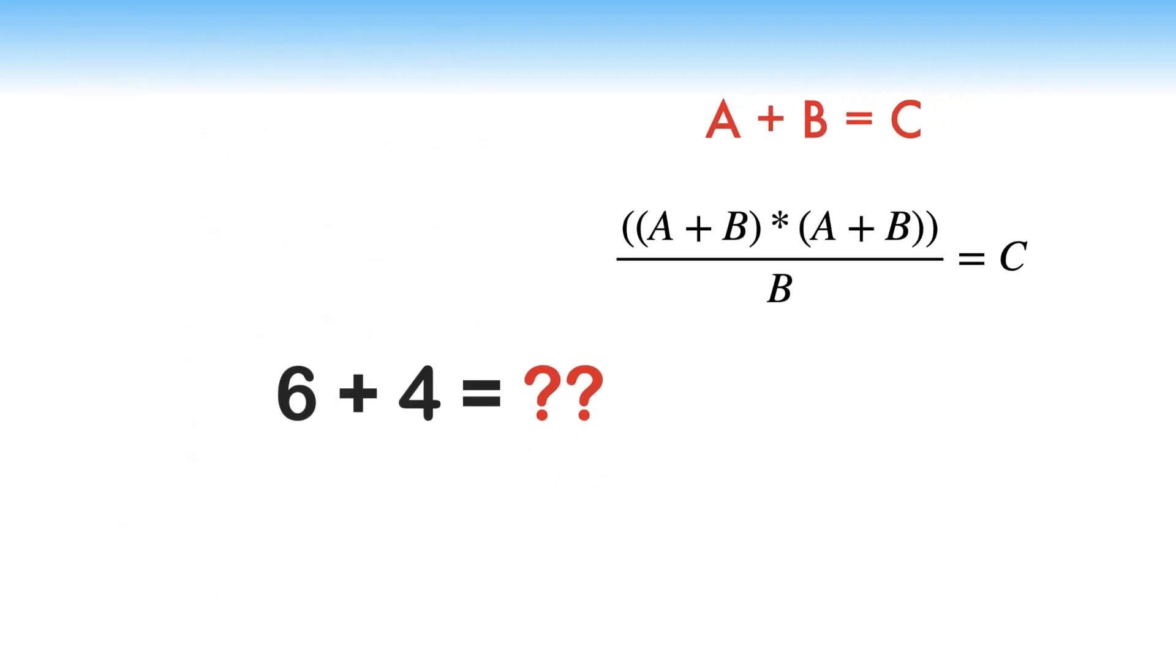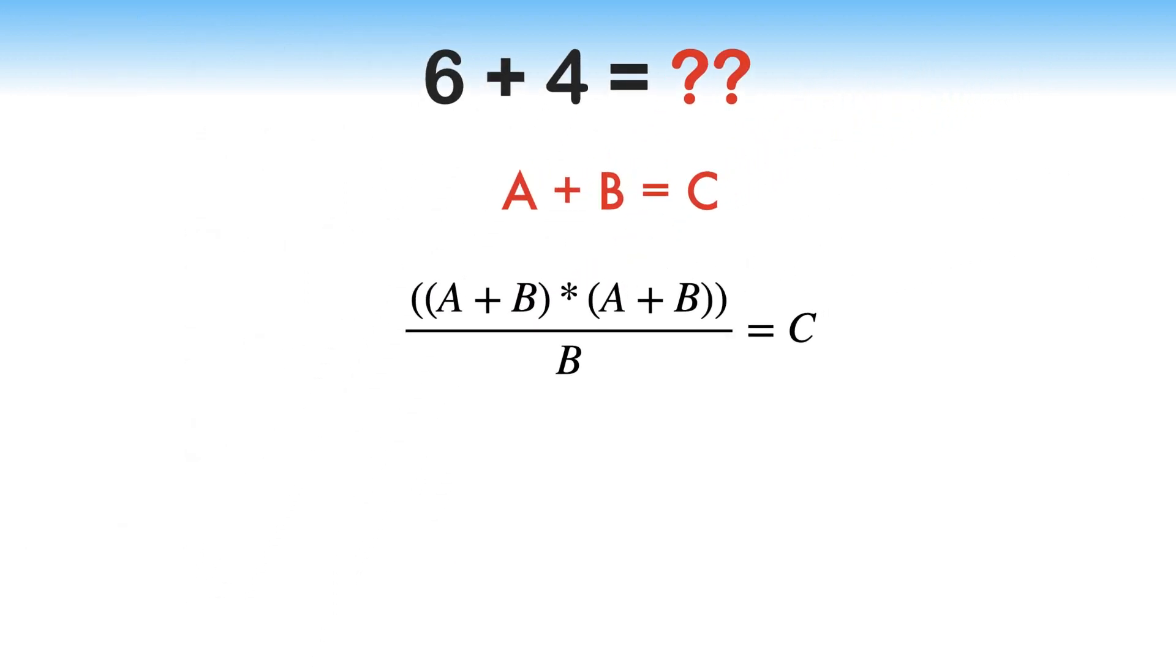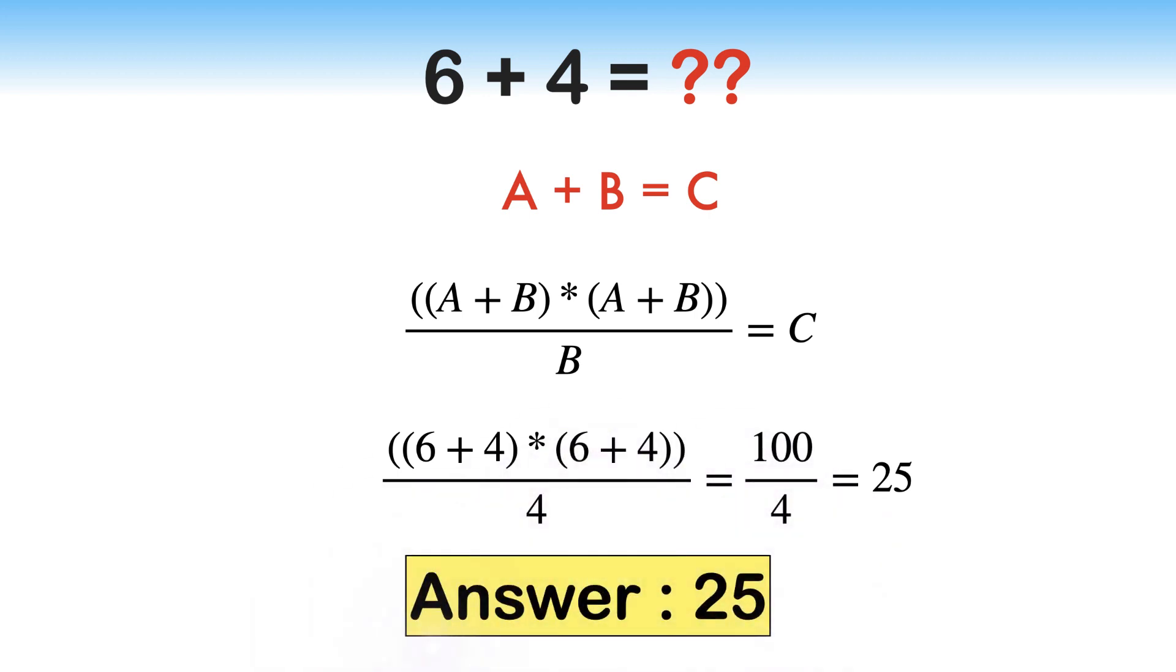Now, let's find the value of final equation. Here, A equals 6 and B equals 4. After substituting the value and simplification, equation becomes 10 times 10 over 4. 10 times 10 equals 100. 100 over 4 equals 25. Hence, the answer to this particular problem is 25.